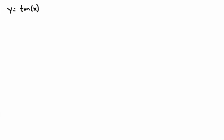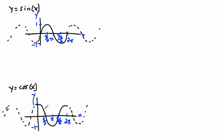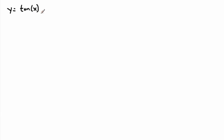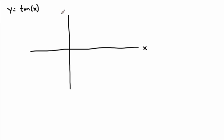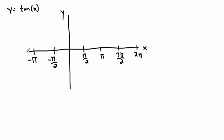Now let's do tangent. Tangent is a little different — sine and cosine look essentially the same, just shifted, but tangent is totally different. Drawing the axes: I'll mark pi over 2, pi, 3 pi over 2, 2 pi going right, and negative pi over 2, negative pi, negative 3 pi over 2 going left.